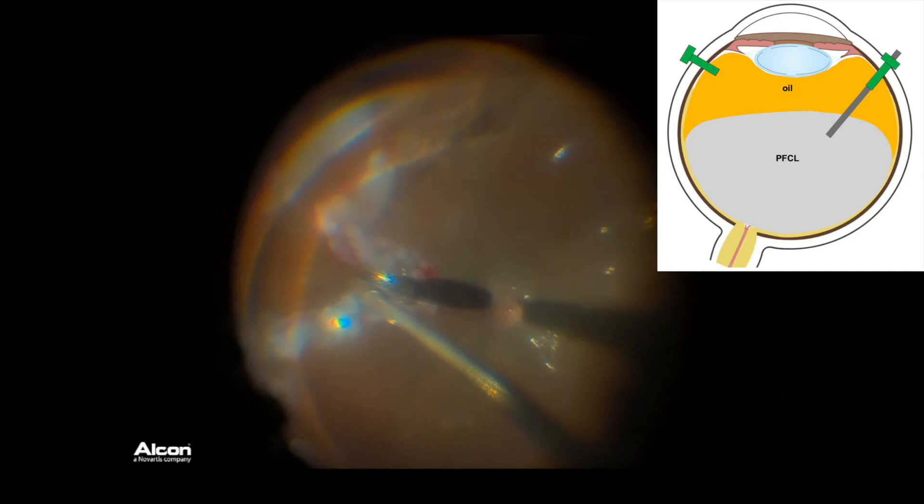After removing the BSS layer, PFCL is aspirated as the silicon oil is injected in the eye, as shown here, mainly at the edge of the retinal tear.